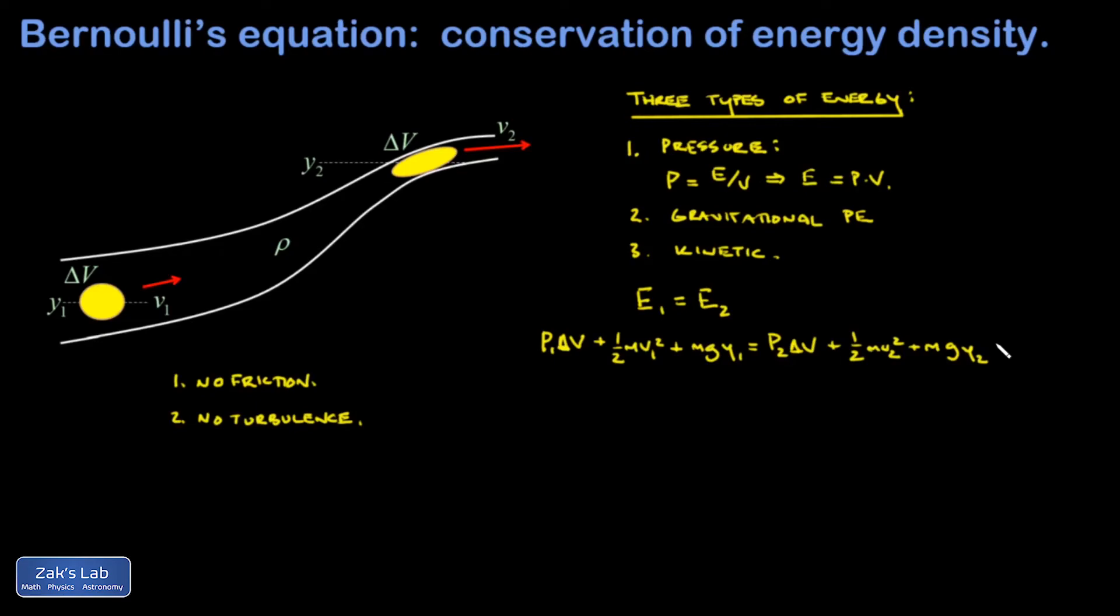And there's just one more tricky thing to do here, and that is I can express the mass of this blob of fluid as the density multiplied by the volume. And so at this point, every one of these terms has units of energy. There's pressure times volume, and then there's just our ordinary kinetic energy and gravitational potential energy.